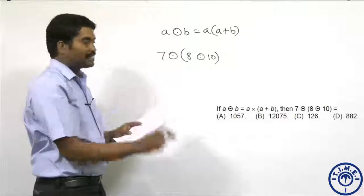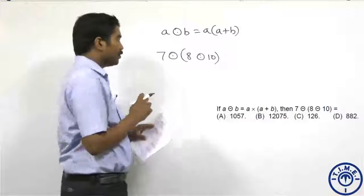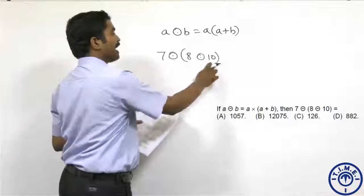This operator is defined as a ⊙ b = a × (a+b). We are asked to find 7 ⊙ (8 ⊙ 10).